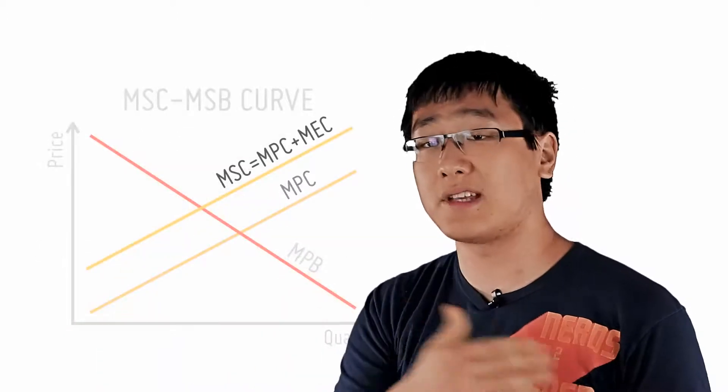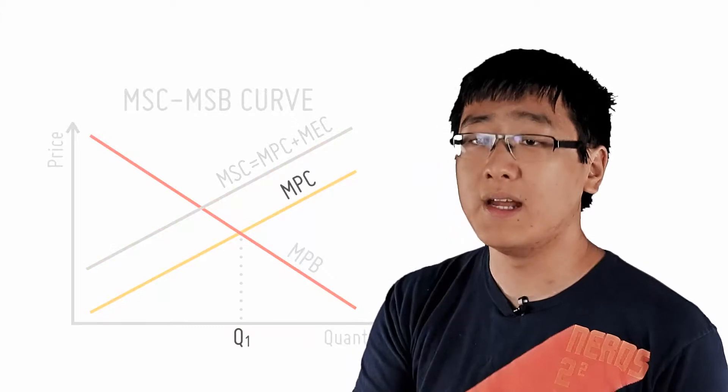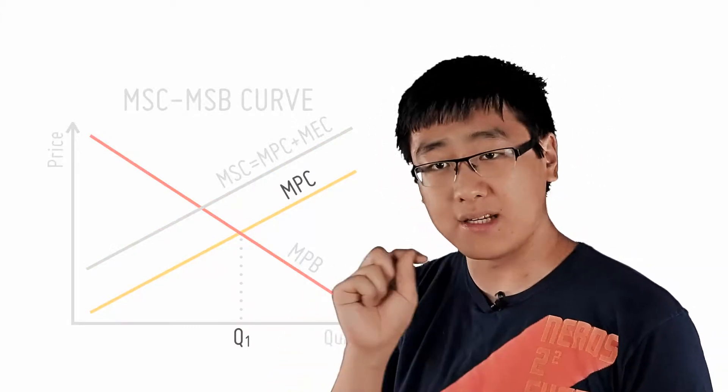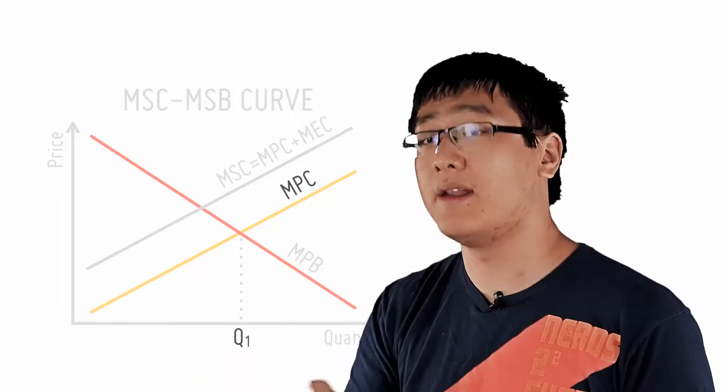The firm itself will only produce at Q1 where marginal private cost equals the marginal private benefit. Remember, the firm only cares about the private component. Because it is profit maximizing, it does not give any thought to the fisherman downstream.